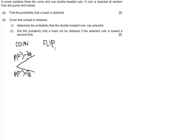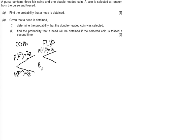Next we look at what happens when we flip the coin. When we have a fair coin, there are two possible outcomes. We can either get a head — the probability of a head given a fair coin is one-half — or not get a head given a fair coin, which also has a probability of one-half.